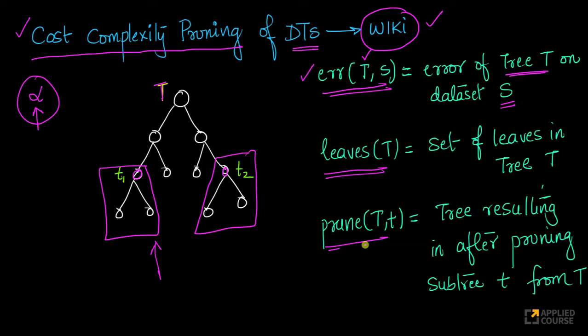Similarly, there is another operation called prune(T,t). So, what this does is - let's assume we have prune(T,t1). This means it is the tree that will result if you prune this subtree. If you remove this, and if you remove this, by pruning this subtree, what you arrive at is - this results another tree. So, prune(T,t) is the tree that will result in after pruning subtree t from the larger tree capital T.